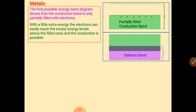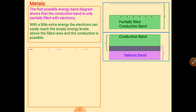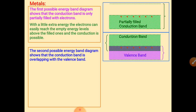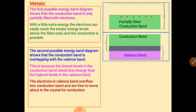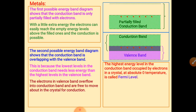As shown in the figure, the valence band and conduction band overlap with each other in metals. Electrons from the valence band can easily move toward the conduction band even with lesser energy. This easy transition of electrons gives metals their high conductivity.